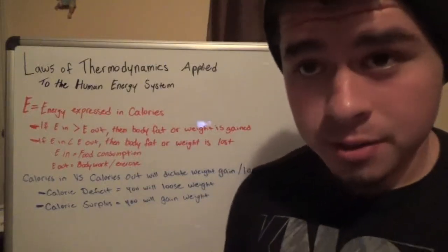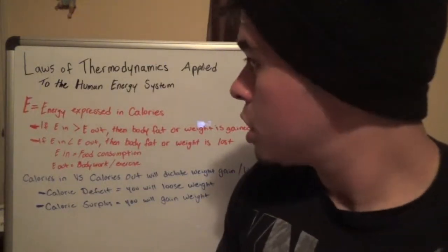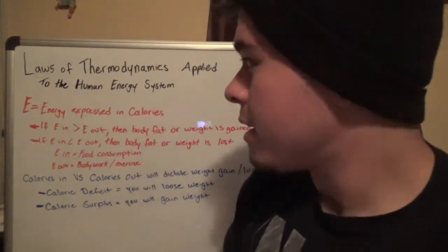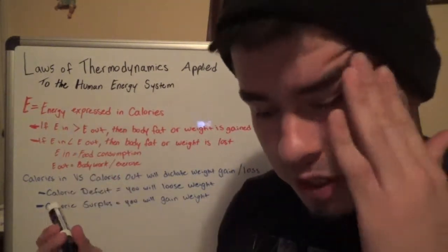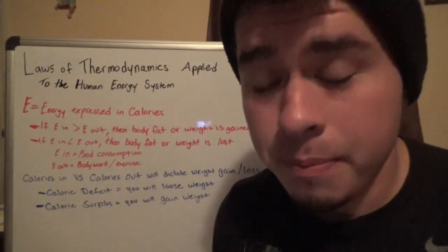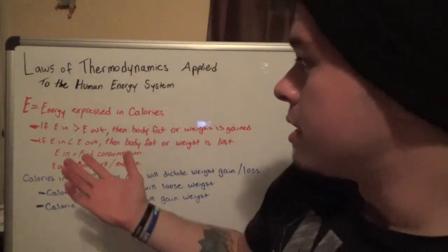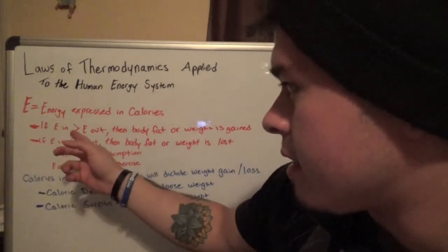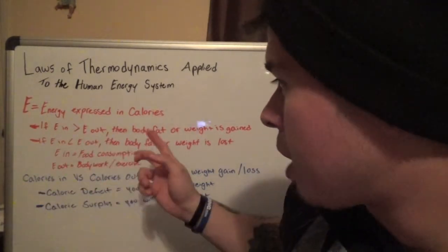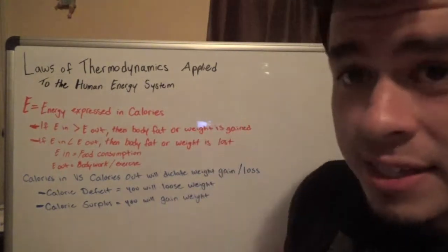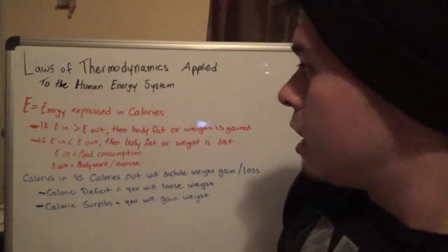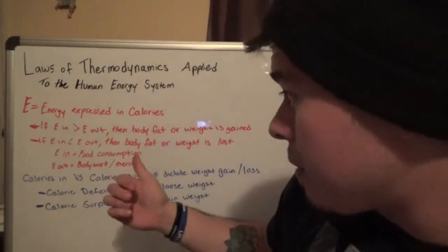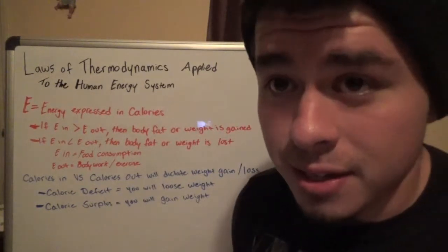We're going to start this video by talking about E. E is going to equal energy expressed in calories, which is the measurement of heat. What it talks about is: if E in is greater than E out, then body fat or weight is gained. If E in is less than E out, then body fat or weight is lost.